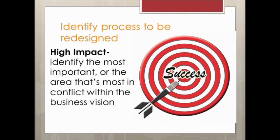Another method to identify the processes that need to be redesigned is to use the high impact approach, which means to identify the most important area or the area most in conflict with the business vision. Companies that employ the high impact approach generally find it sufficient. Those companies taking the exhaustive approach, however, have not had the resources to quickly address all identified processes.